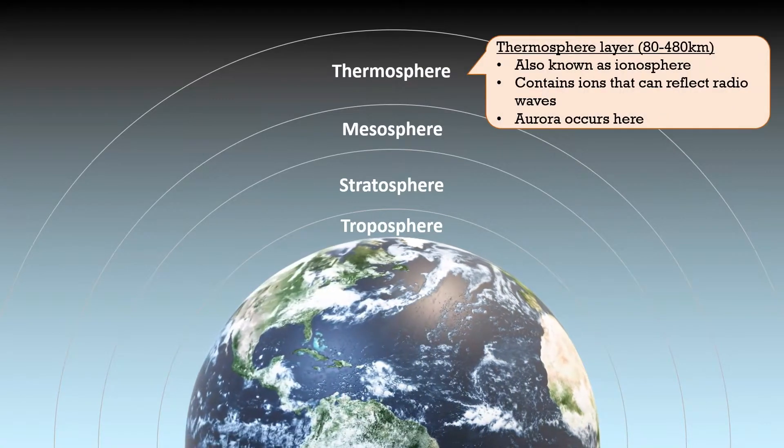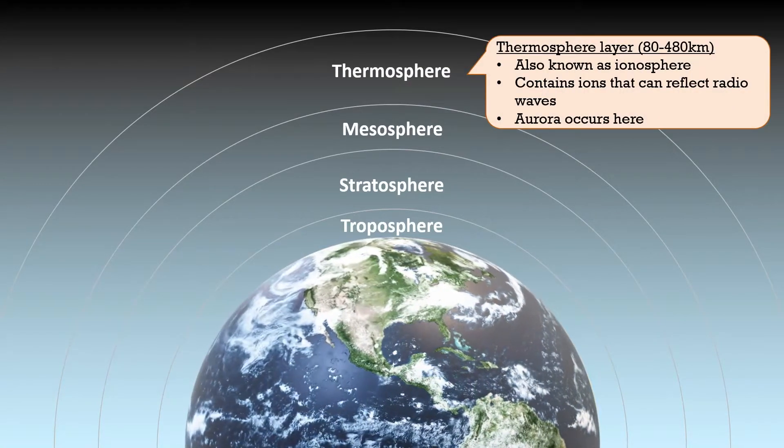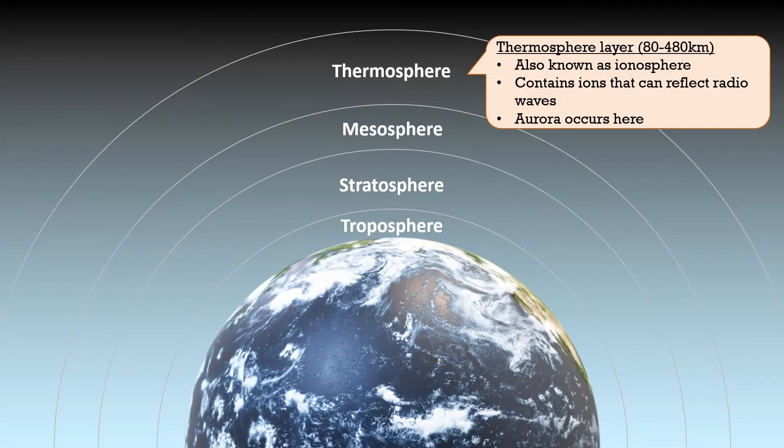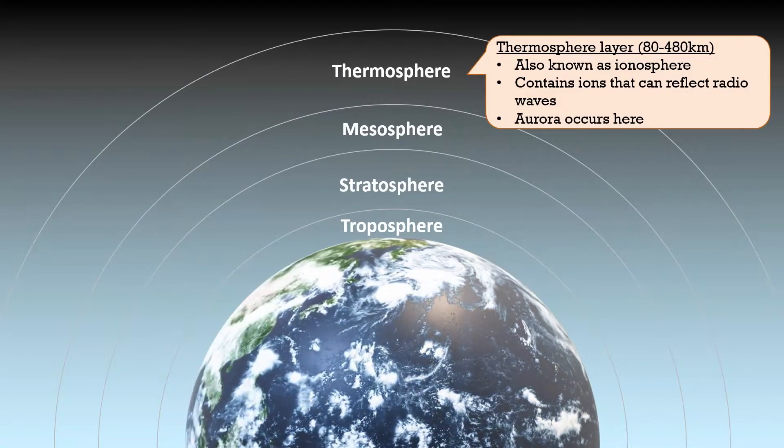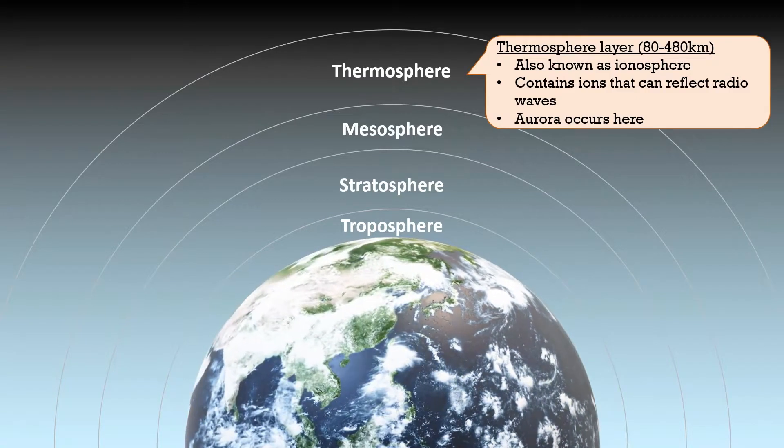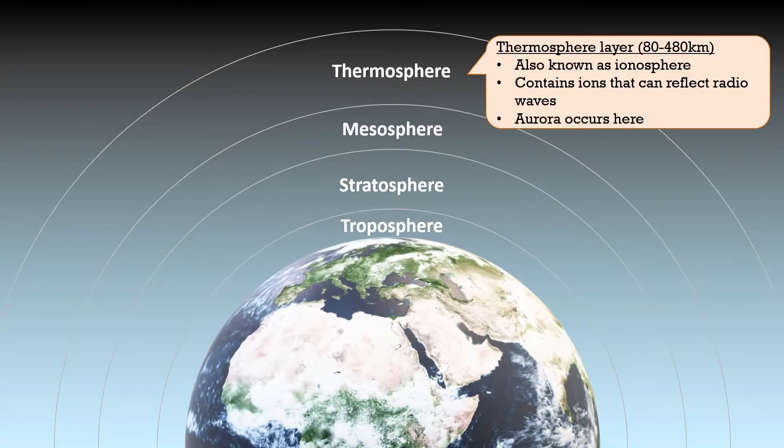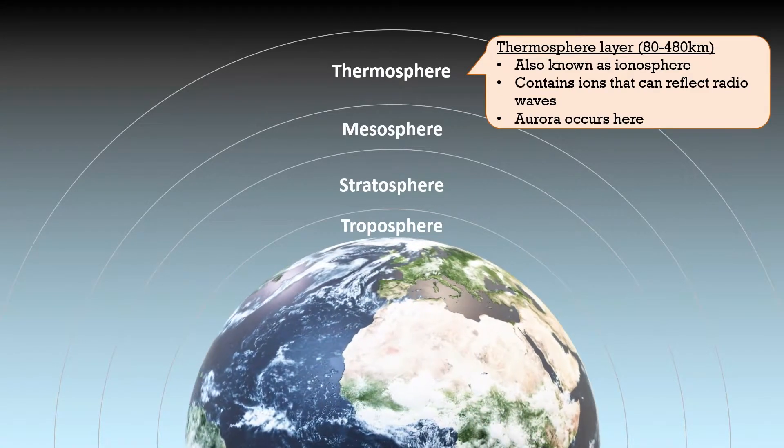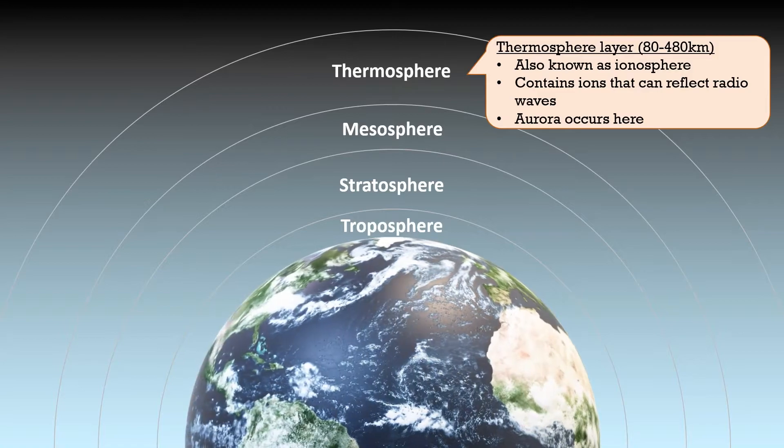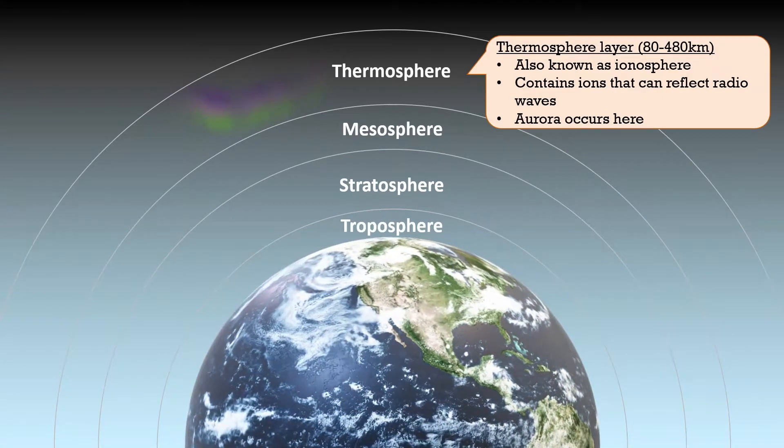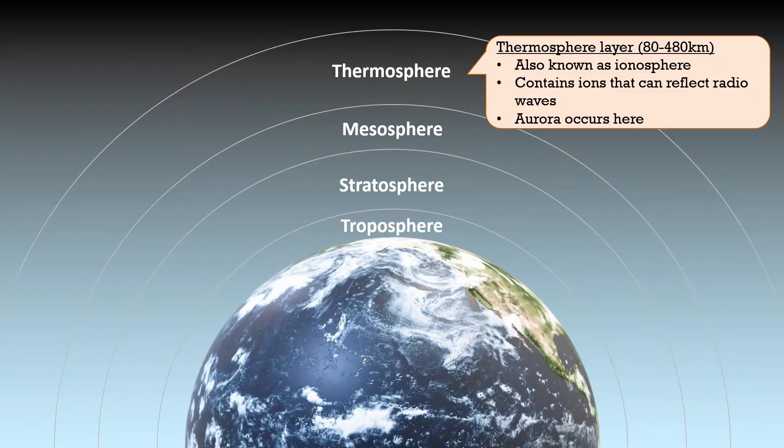Our fourth layer, the thermosphere. It is the thickest layer of our atmosphere. It is also known as ionosphere since it contains ions that are produced from the sun's radiation. This causes the temperature to increase to a few hundred degrees Celsius. The ions are also capable of reflecting radio waves which are used for communications and navigation. Last but not least, the famous aurora or also known as polar lights actually occurs in this layer.